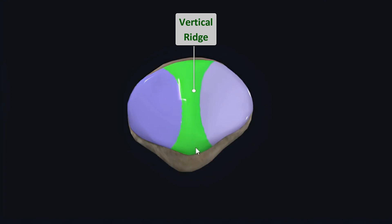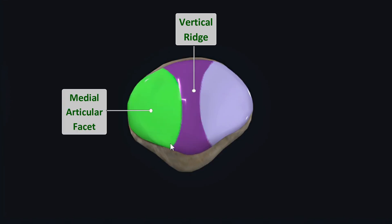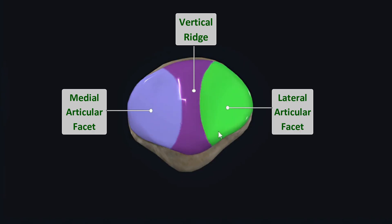Just medial to this vertical ridge you can see the smooth concave area which is the medial articular facet of patella. The medial articular facet articulates with the articular facet of the medial condyle of femur, contributing to the formation of the patellofemoral joint. Laterally to the vertical ridge is the smooth concave area which is the lateral articular facet of patella, and it articulates with the articular facet of the lateral condyle of femur, also contributing to the formation of the patellofemoral joint.